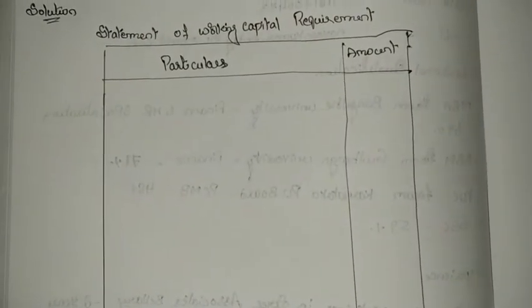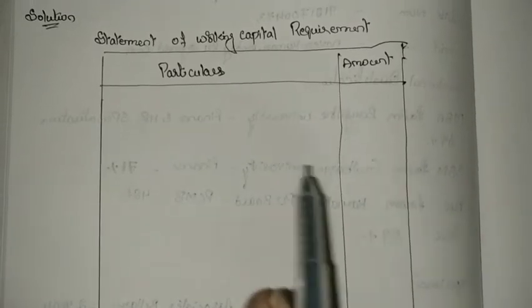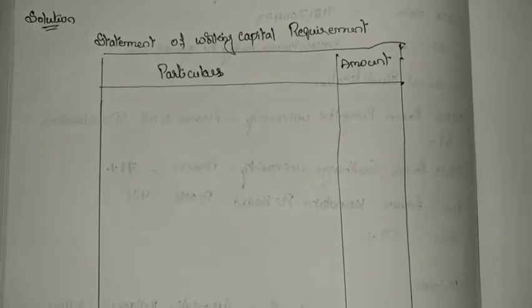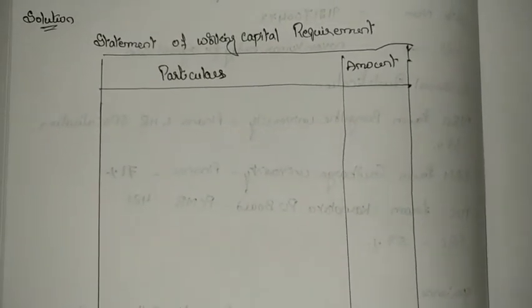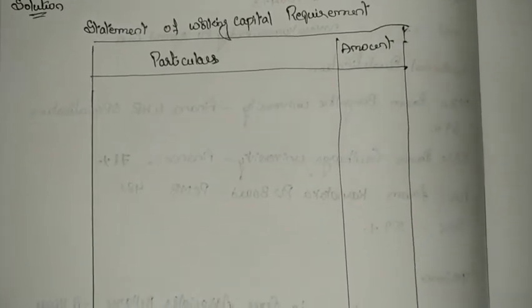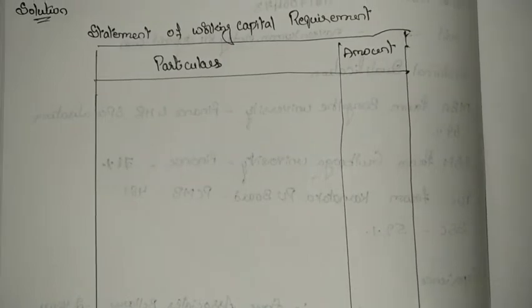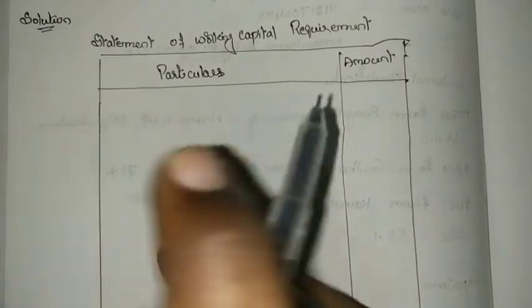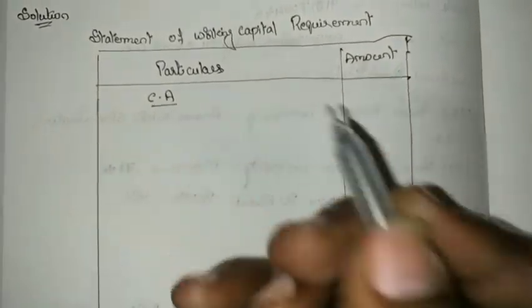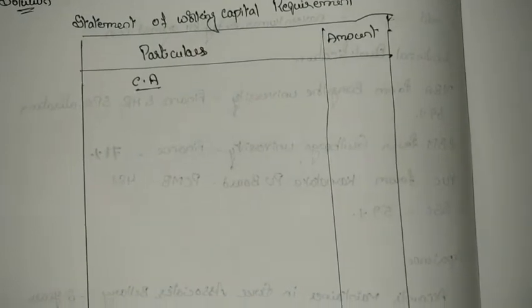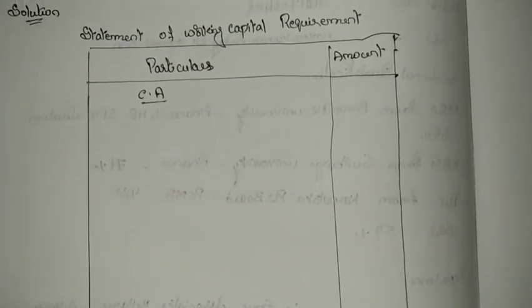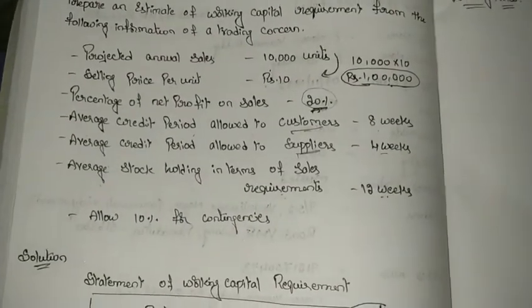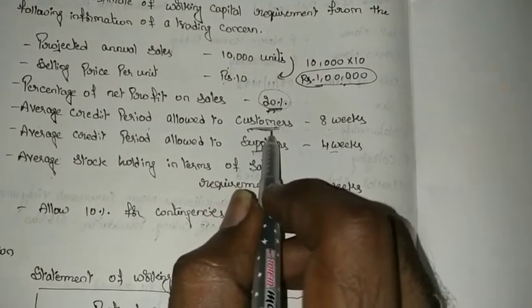This is the pro forma used for preparing the statement of working capital requirement. You will have two columns: particulars and amount. Working capital is current assets minus current liabilities. In the particulars, first write down all the current assets. From the given information, identify all current assets — which are debtors (customers) and stock.